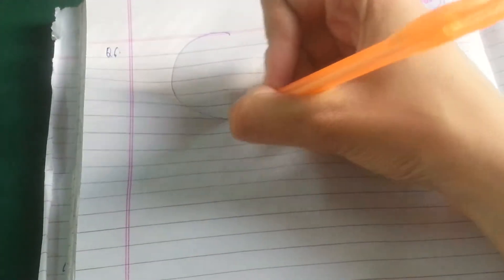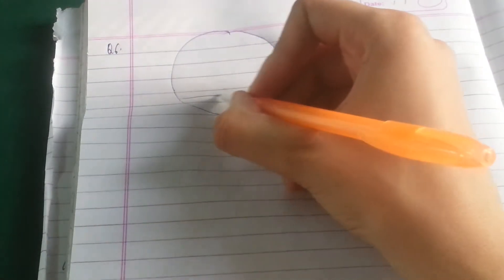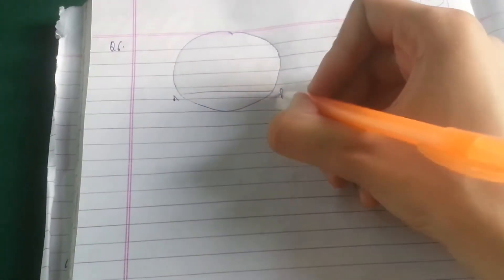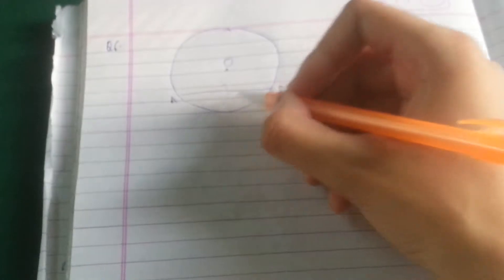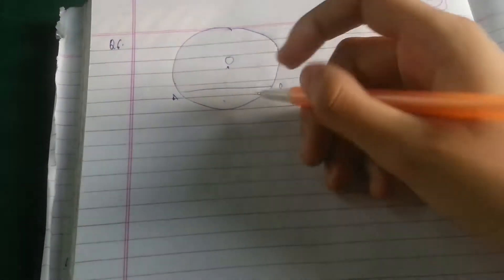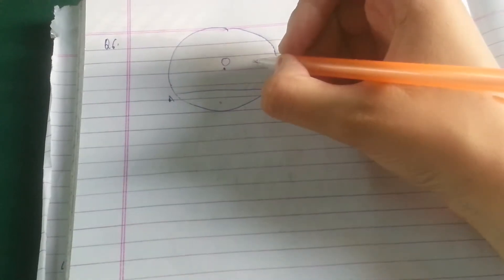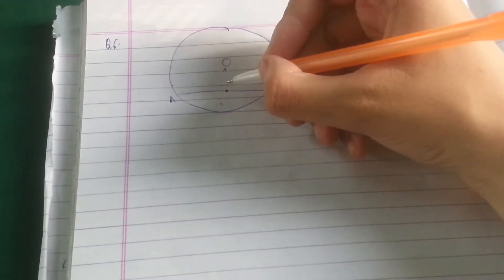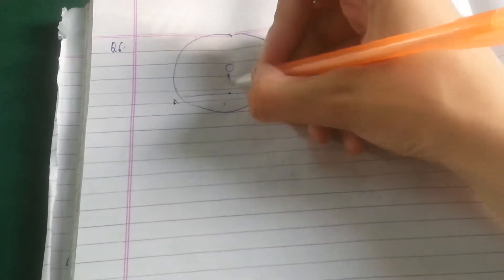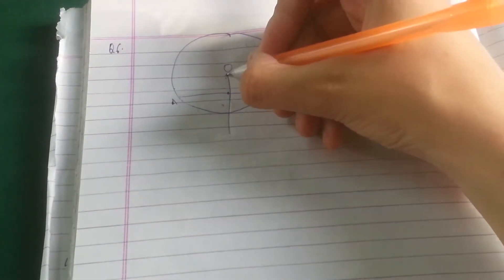So here we have a circle and we have a chord. Now this is your chord AB and O is the center of the circle, and this is your minor arc. This portion is your minor arc. Now you have to prove that the line joining the midpoint of the chord, let's say it's the midpoint of the chord to the center.